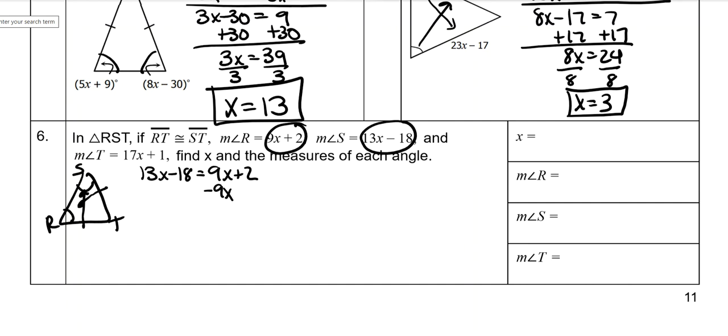Subtract 9X on both sides. Add 18 to both sides, and divide by 4. So X is 5.